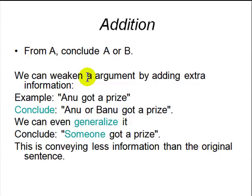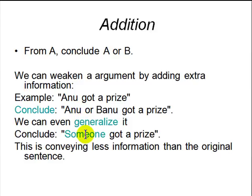Addition means: if you have a fact A, then you can conclude 'A or B' is true. That is called weakening an argument by adding extra information. For example: Anu got a prize, and we can conclude 'Anu or Banu got a prize.' The second case conveys less information but is still implied by the first. We can even generalize using quantifiers — which we'll see in first-order logic in the next lecture — concluding 'someone got a prize' without specifying who.